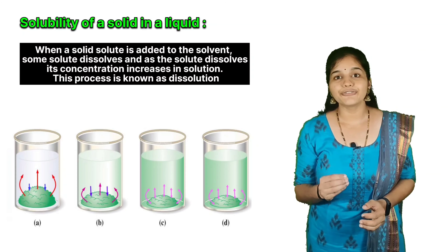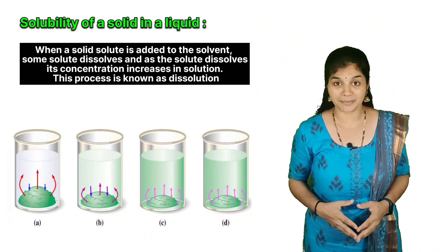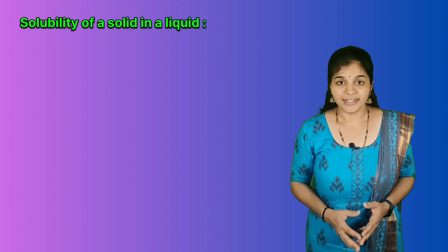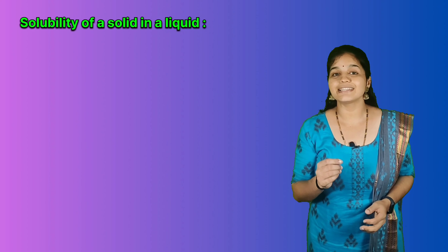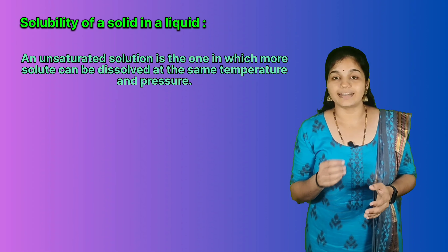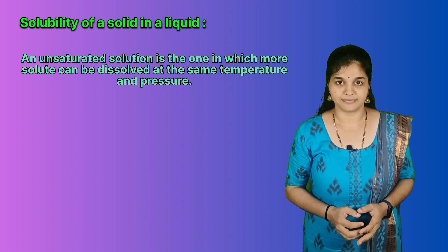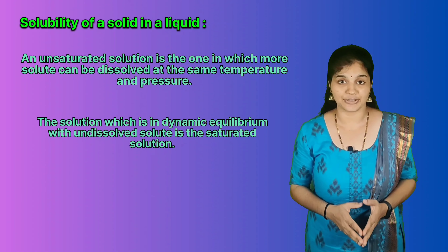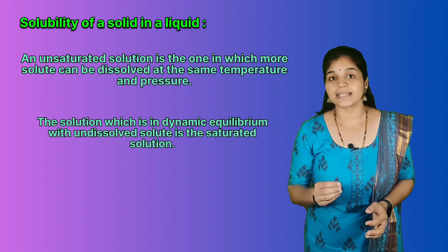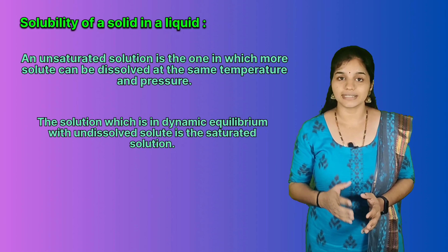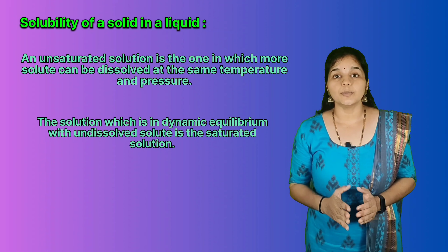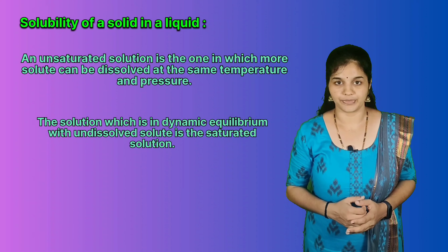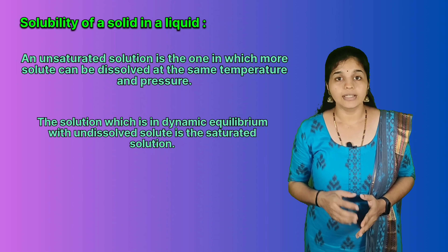Such a solution is called a saturated solution. On the other hand, if you can dissolve more solute in a solution at the same temperature and pressure, we call it an unsaturated solution. The solution in dynamic equilibrium with undissolved solute is the saturated solution and contains the maximum amount of solute dissolved in a given amount of solvent. Thus, the solubility of a saturated solution equals the concentration of the solute.